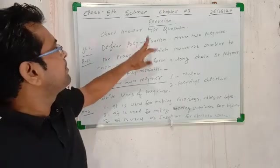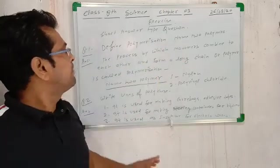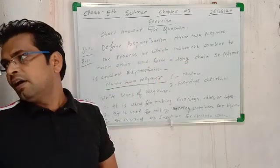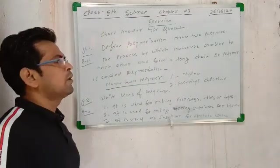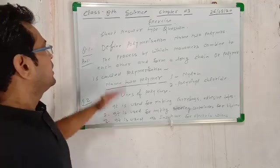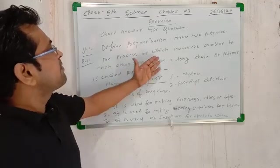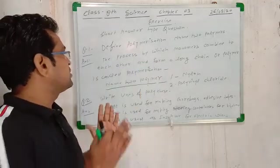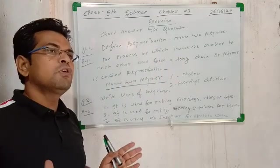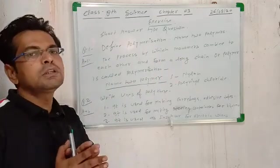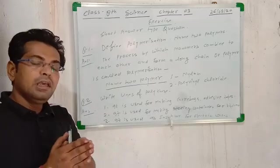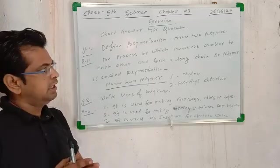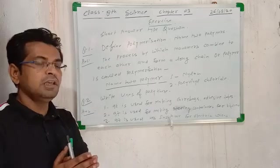First question is: define polymerization and name two polymers. Polymerization is the process by which monomers combine to each other and form a long chain. Monomers combine with each other and form a long chain.